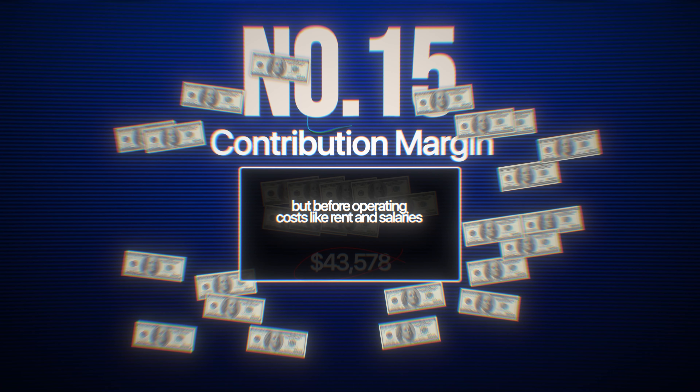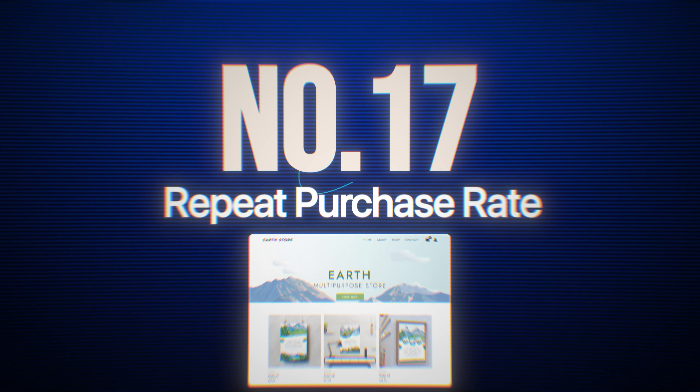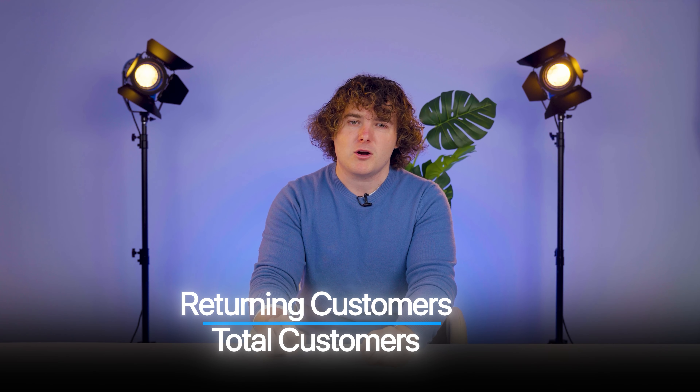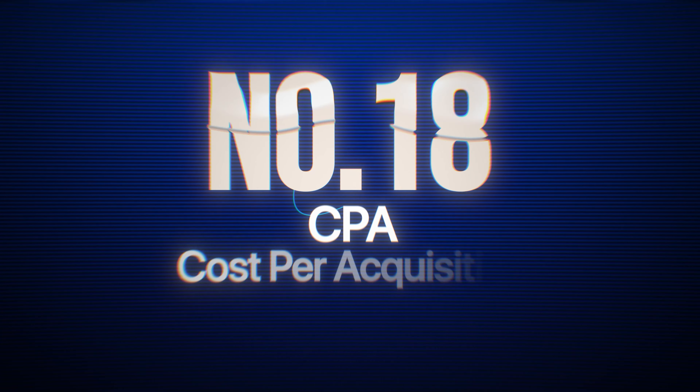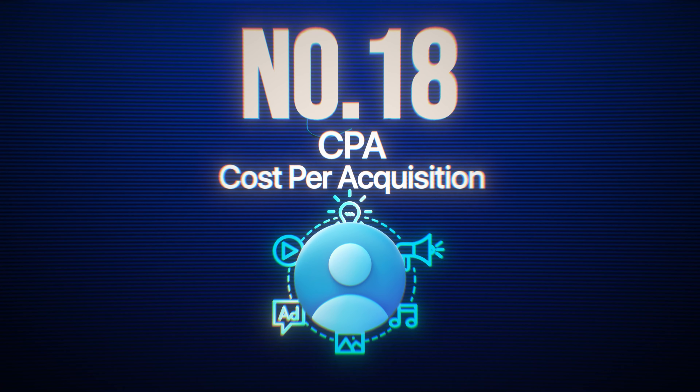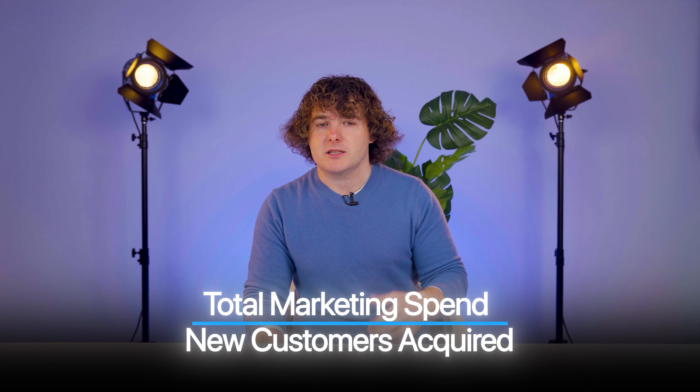Number 16 is your churn rate, which measures how many customers stop buying from you. Divide the number of customers lost by customers at the start, then multiply by 100. If you started with 500 customers and lost 50, your churn rate is 10%. I put this in advanced metrics because it doesn't really matter much until you've captured a large market share — it's more relevant for eight and nine-figure businesses. Number 17, repeat purchase rate, shows what percentage of customers are coming back for more. Divide returning customers by total customers and multiply by 100. If 100 out of 500 customers make repeat purchases, your repeat purchase rate is 20%. Number 18, CPA (cost per acquisition), shows how much it costs to acquire a customer across all channels. Divide total marketing spend by total customers acquired. If you spent $20,000 and gained 500 customers, your CPA is $40.